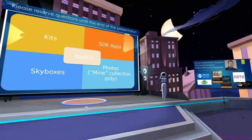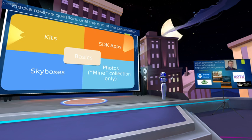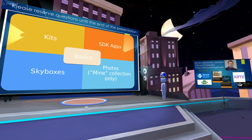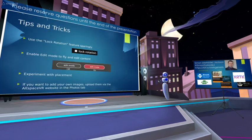There are also skyboxes that let you change the sky — so if you want a night scene, a day scene, or a funky jazzy environment, you can do that. Then there are basics: cubes, boxes, and other items you can place in your scene. Choose what you want to use and place it.